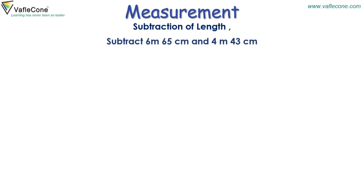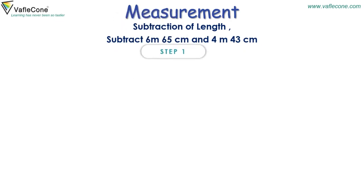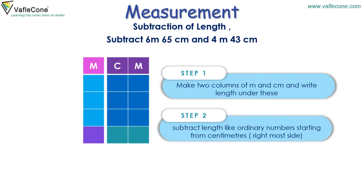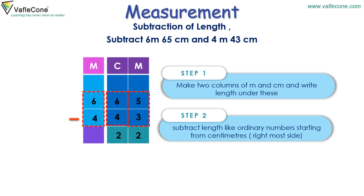Subtraction of length. Subtract 6 meters 65 cm and 4 meters 43 cm. Step 1: Make two columns of meter and centimeter and write the lengths under these. Step 2: Subtract the lengths like ordinary numbers starting from centimeters. Place 6 and 4 in the meter column and 65 and 43 in the centimeter column. 5 minus 3 is equal to 2, then 6 minus 4 is equal to 2. In the meter column, 6 minus 4 is equal to 2. So the answer is 2 meters 22 cm.